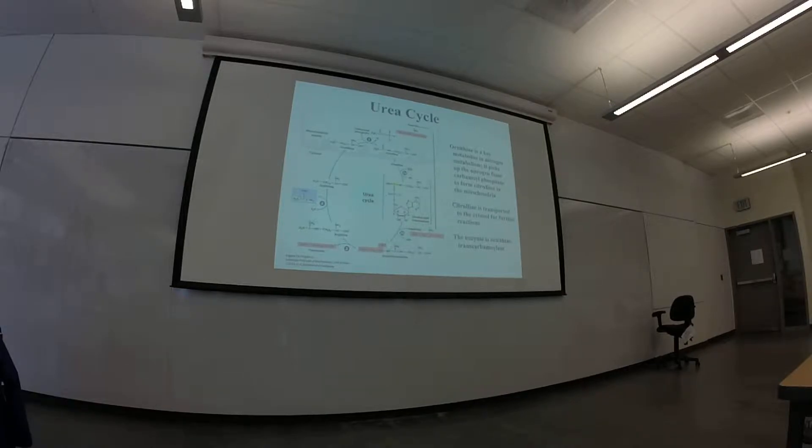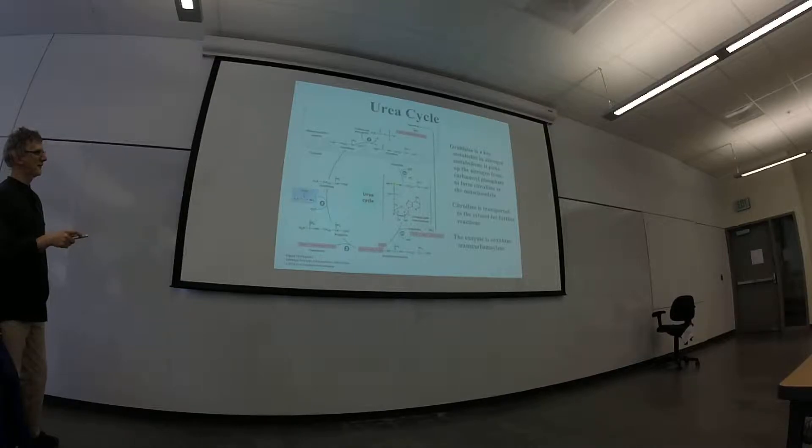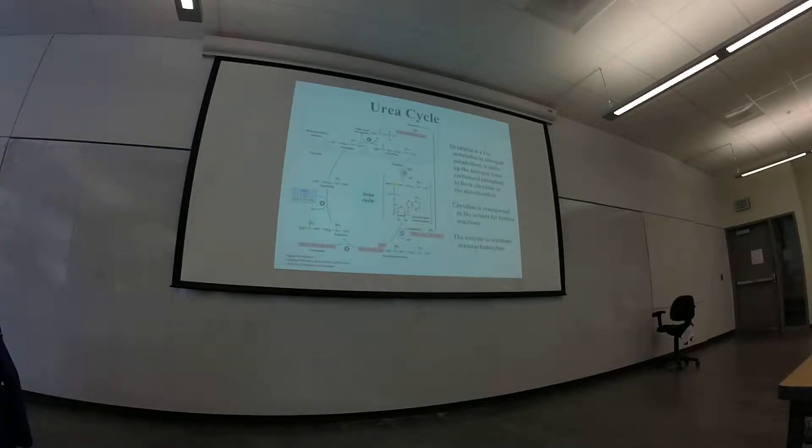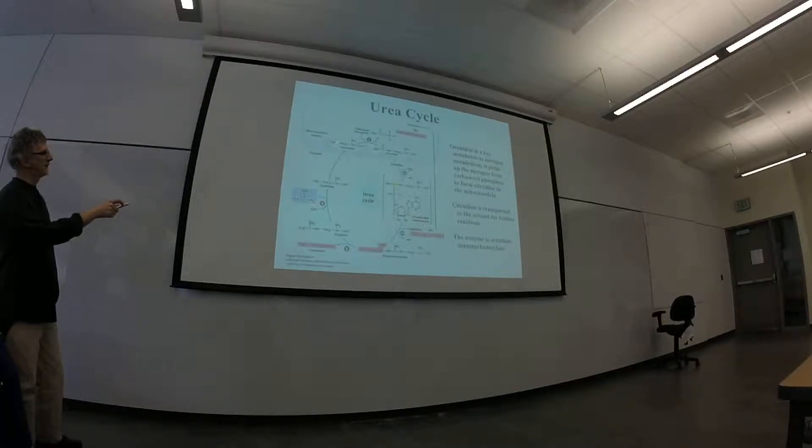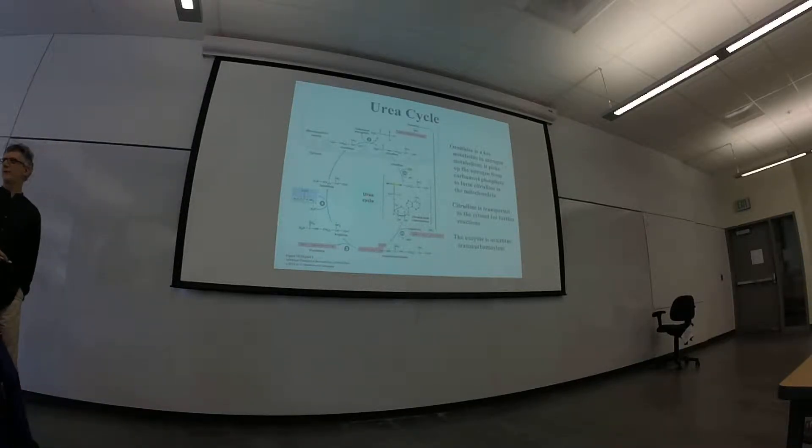So here's the urea cycle. Carbamoyl phosphate coming in from that last reaction. And so the first step is an enzyme that's in the mitochondria, and it is called ornithine transcarbamylase, and it generates citrulline from ornithine. And so if you remember the structure of ornithine, which you should know, CCC-NC-NN for the guanidine group, CCC-N, and you're done. So this is basically lysine missing a methylene group.